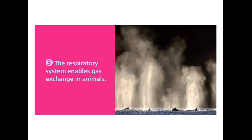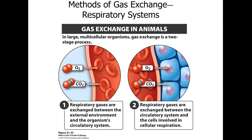The respiratory system enables gas exchange in animals. In large multicellular organisms it uses a two-stage process: respiratory gases are exchanged between the external environment and the circulatory system at the capillaries in the alveoli of the lungs (oxygen in, carbon dioxide out), and then oxygenated blood is carried to the tissues where oxygen diffuses in and carbon dioxide diffuses back into the bloodstream.